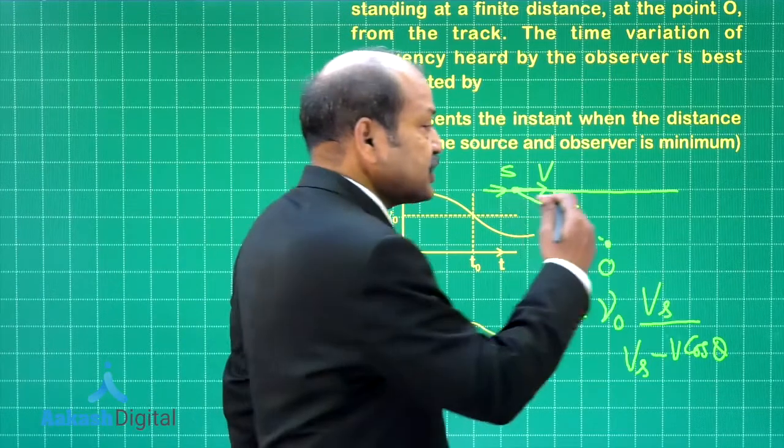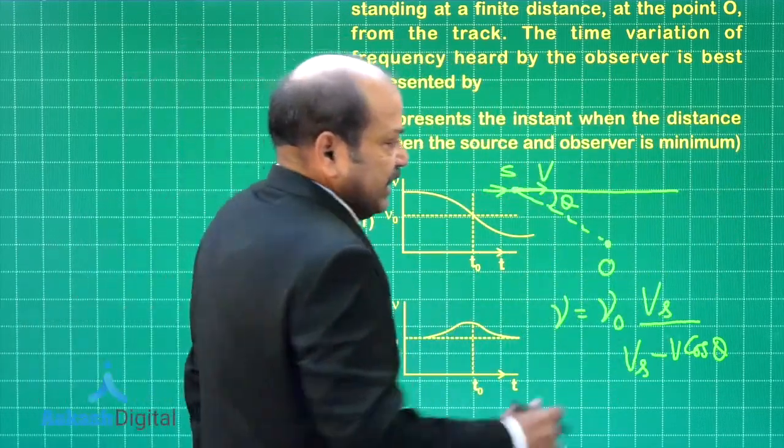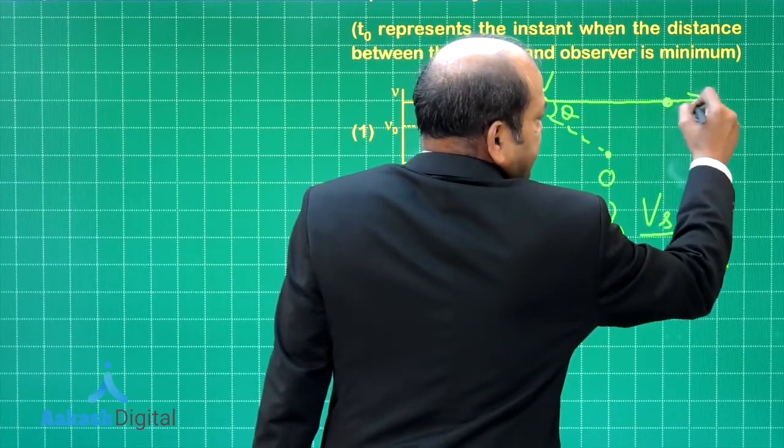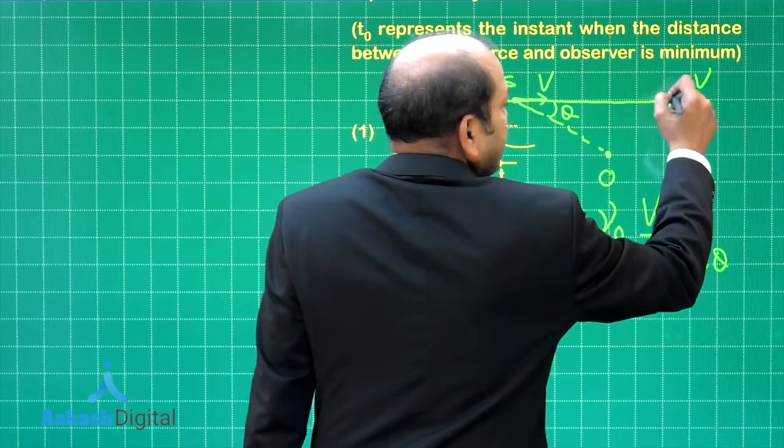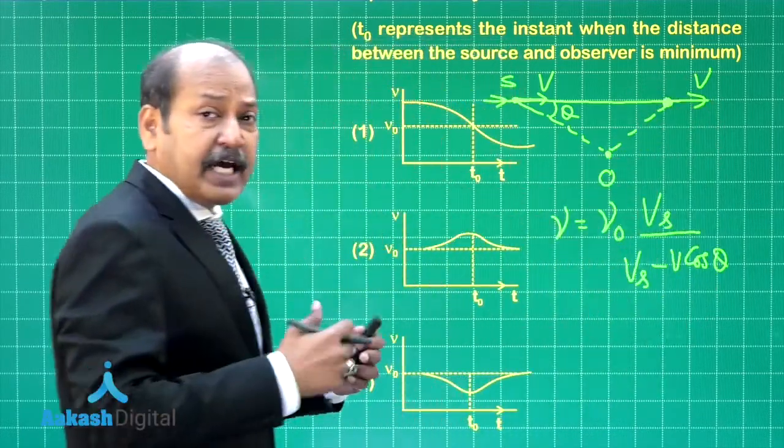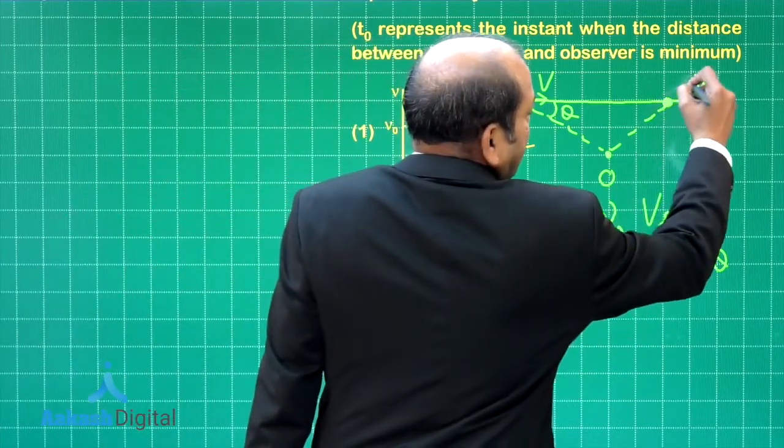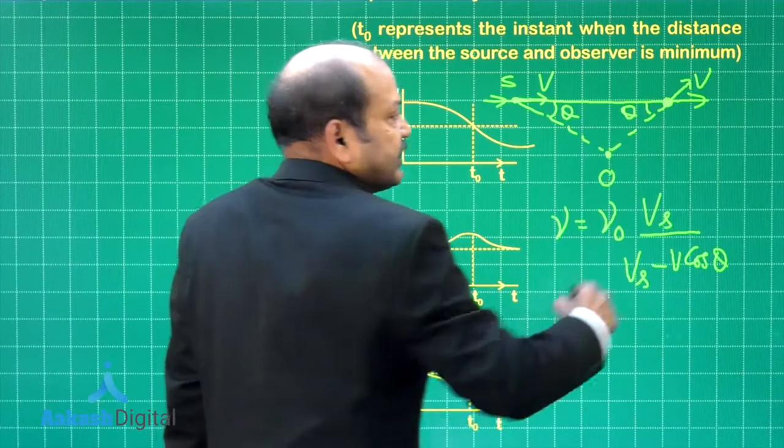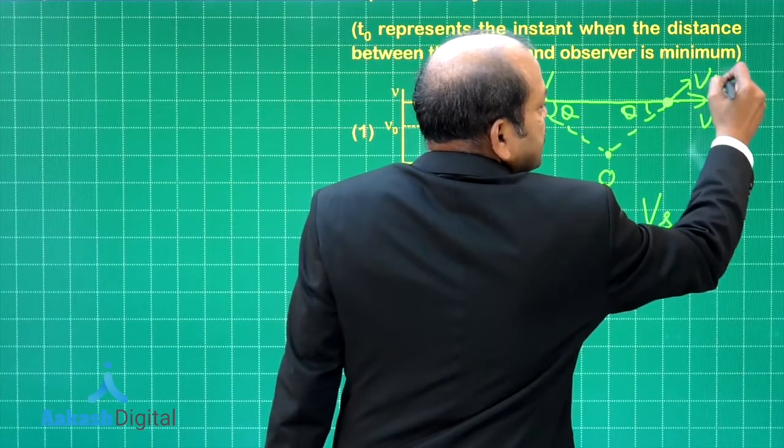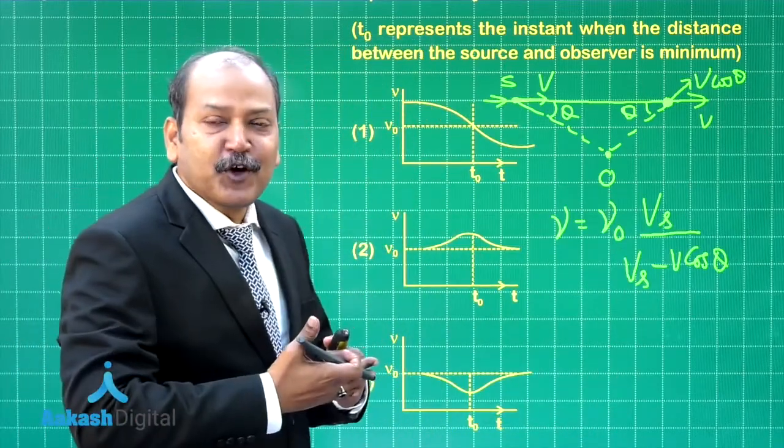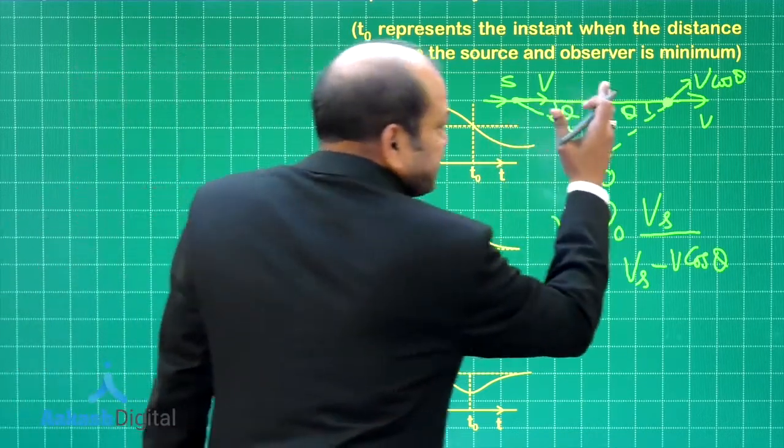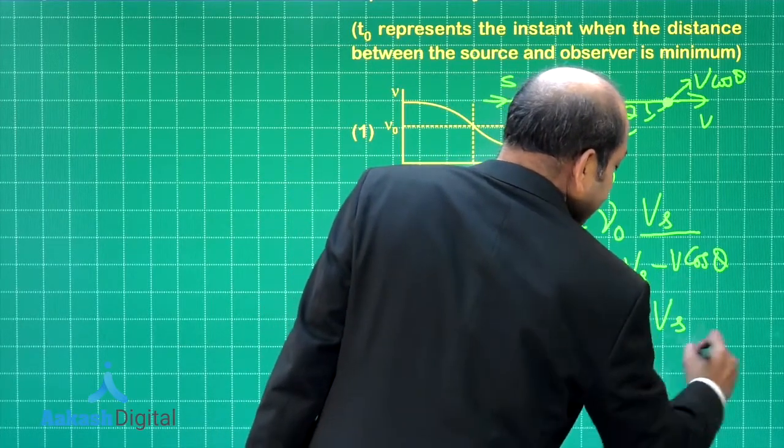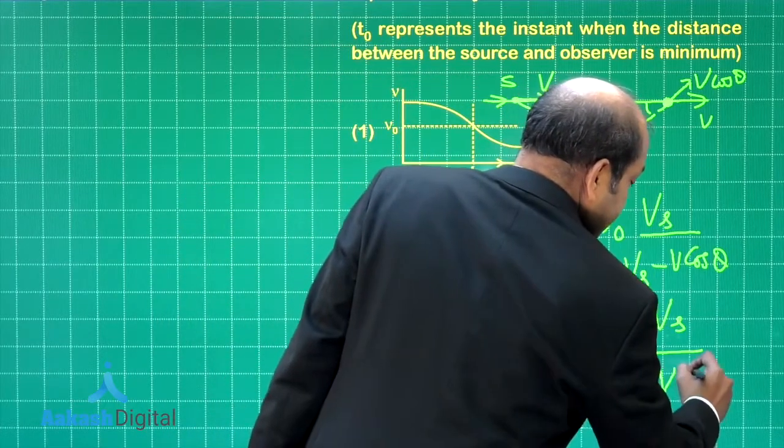What happens when the source starts receding away from the observer? Let us assume that the source now has reached somewhere here and at that moment its velocity is along this line again. If we look at the component of velocity along the line joining the source and the observer, that component in fact is away from the observer and if this angle is again theta, so we have this component as V cos theta. This time the source is moving away from the observer. So the expression for frequency becomes nu is equal to nu naught again we have V s in the numerator but in the denominator we will have V s plus V cos theta.